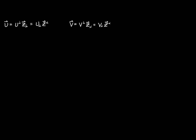Here we have two vectors, vector u and v, each of which can be expressed as linear combinations using either the covariant basis or the contravariant basis. So let's see if we can find an expression for the dot product between these two vectors.